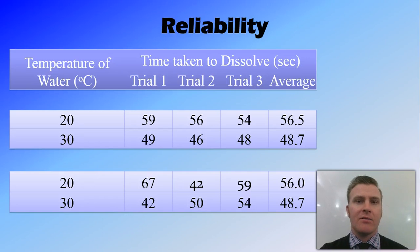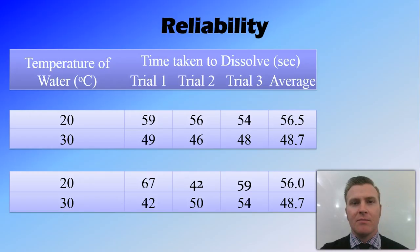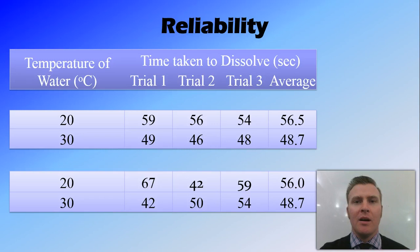In the second set of results, for 20 degrees I've got 67, 42, 59 seconds, and for 30 degrees, 42, 50, 54 seconds. In the first temperature there's more than 20 seconds difference between them, and in the second there's about 15 seconds. You can see that the averages are the same, so if I were to plot the averages I'd still get the exact same graph. However, the results that I've got are unreliable.